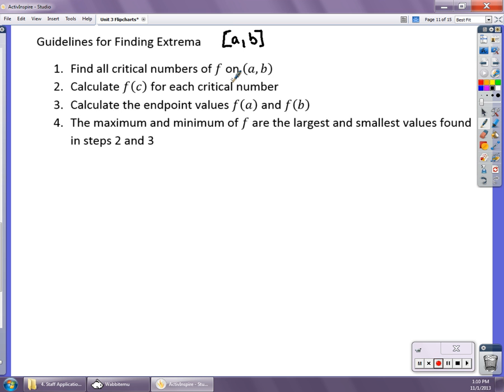So find all your critical numbers by taking the derivative, setting it equal to zero, wherever it's zero or undefined, and those are critical numbers. And then you want to calculate the value of your function at your critical numbers. You want to calculate the value of your function at your endpoints at f(a) and f(b). And then the maxes and the mins are going to be the largest and smallest values in steps two and three.